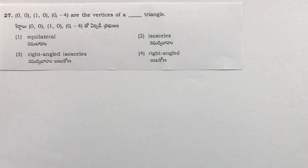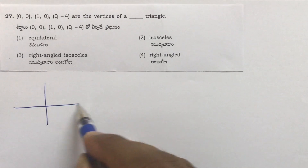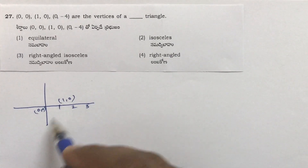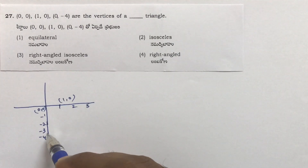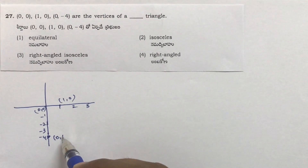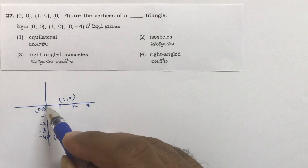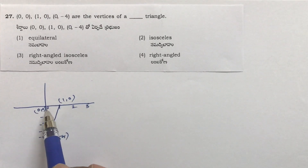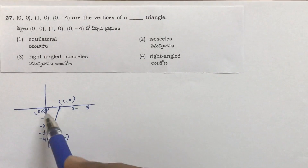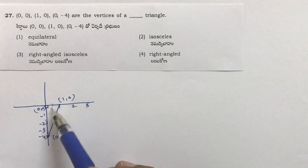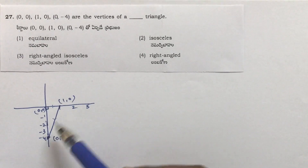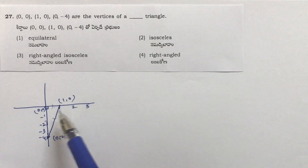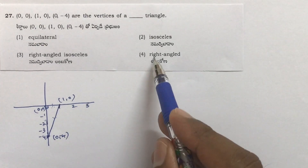Given vertices (0,0), (1,0), and (0,−4): plot these points. (0,0) is the origin, (1,0) is one unit right, and (0,−4) is four units down. Joining them gives a right angle triangle with legs of length 1 and 4, and a hypotenuse longer than both. All three sides are different, so it is not equilateral or isosceles — just a right angle triangle. The correct option is 4.